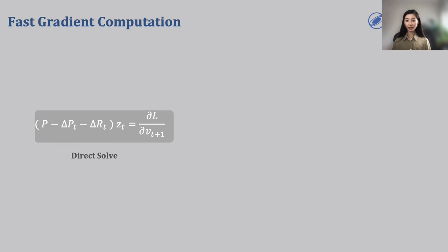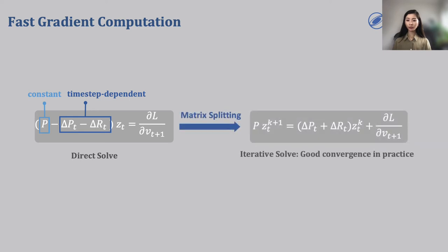It turns out that we can. If we take a closer look at the governing equation for backpropagation, we see that the system matrix can be broken down into a constant part and a time-dependent part. This gives us an idea to solve the system using an iterative scheme, where we iteratively update our guess by computing the right-hand side of the equation, which involves matrix multiplication with the time-dependent matrices, then solving a linear system that has a constant system matrix. Since this matrix is constant, we can prefactorize it, and solving the system itself will be fast. We repeat this process until the solution converges, and we observe good convergence rate in practice.